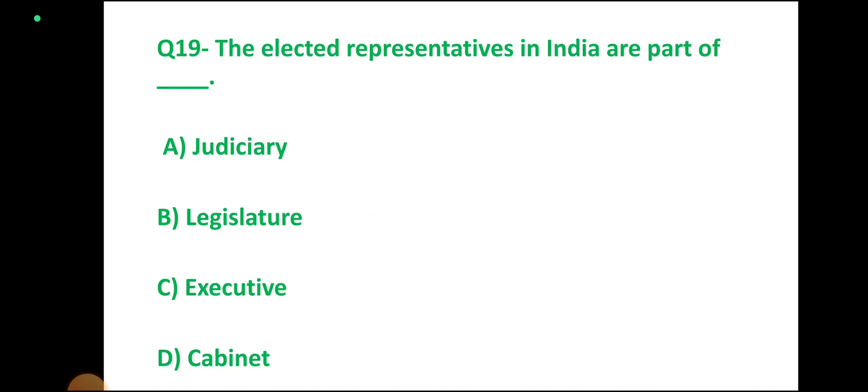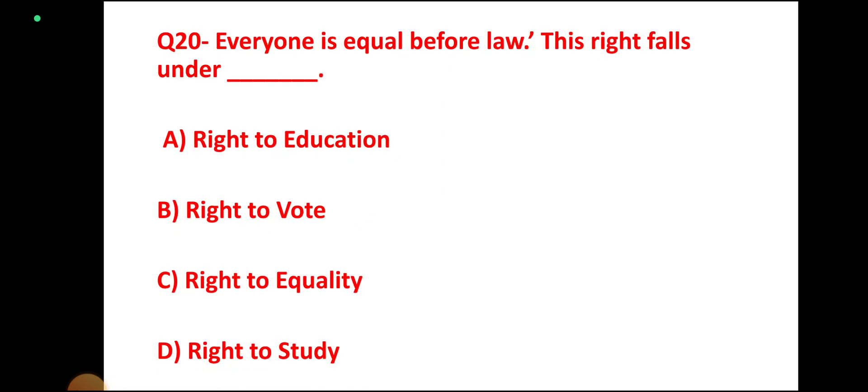Question number 19. The elected representatives in India are part of which branch? Options: Judiciary, Legislature, Executive, Cabinet. Correct answer: Legislature. Question number 20. Everyone is equal before law — this right falls under which of the following? Options: Right to Education, Right to Vote, Right to Equality, Right to Study. Correct answer: Right to Equality.